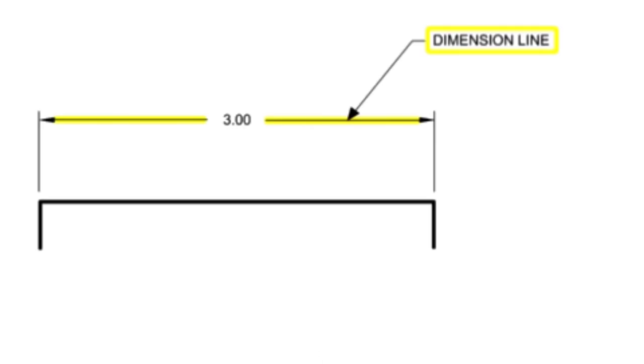Dimension lines typically terminate in arrowheads at each end and include the dimension of the part within the line. They are unbroken except where space is required for the dimension.